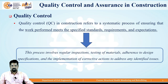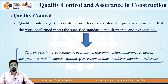Quality Control plays an important role in construction, which refers to a systematic process of ensuring that the work performed meets the specified standards, requirements and expectations of the clients. This process involves regular inspection during execution, testing of different materials, adherence to design specifications, and the implementation of corrective actions to address any identified issues. Regular inspection rounds are required to maintain the quality of the project.